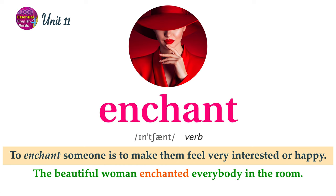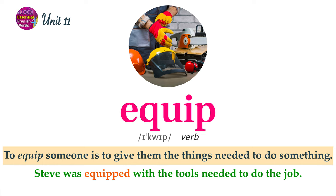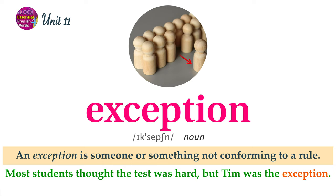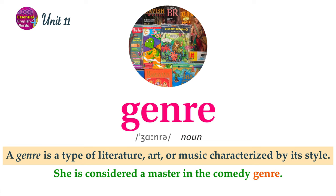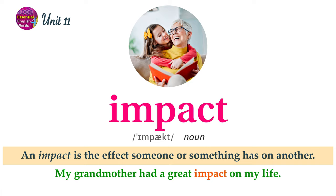To enchant someone is to make them feel very interested or happy. The beautiful woman enchanted everybody in the room. To equip someone is to give them the things needed to do something. Steve was equipped with the tools needed to do the job. An exception is someone or something not conforming to a rule. Most students thought the test was hard, but Tim was the exception. A genre is a type of literature, art, or music characterized by its style. She is considered a master in the comedy genre.